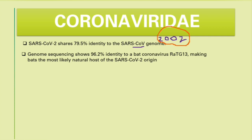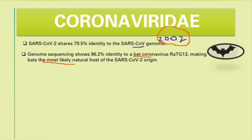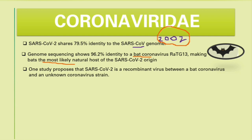Genome sequencing shows 96.2% identity to a bat coronavirus RATG13, making the bat the most likely natural host for the SARS-CoV-2 origin. Furthermore, studies propose that SARS-CoV-2 is a recombinant virus between a bat coronavirus and an unknown coronavirus strain.